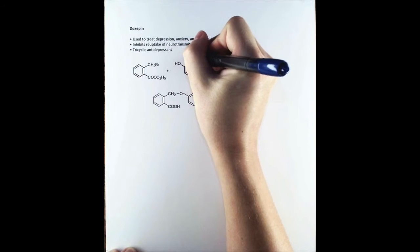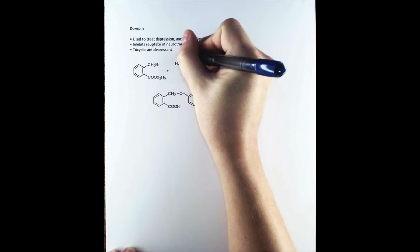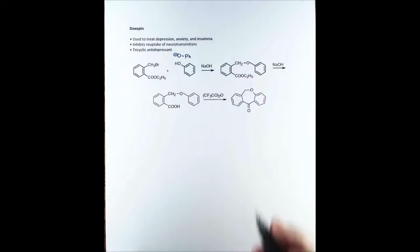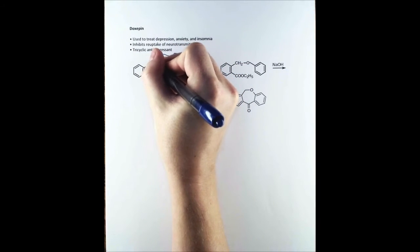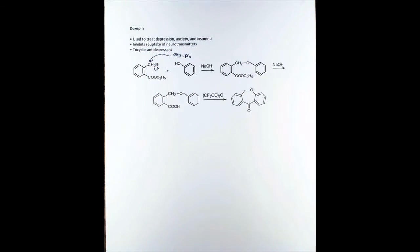In the first step of our synthesis, sodium hydroxide deprotonates phenol creating a phenoxide. The phenoxide does SN2 chemistry at this primary bromide. This sets the stage for our ring closure.